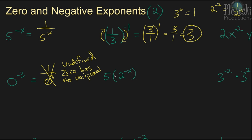Next: 5 times 2 to the negative x. We're going to rewrite that as 5 times the reciprocal, which is 1 over 2 to the x. Then we can multiply. When you multiply a whole number times a fraction, you just multiply the whole number times the numerator. So, it becomes 5 times 1, which is 5, over 2 to the x. And that's your answer.